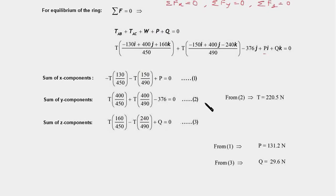So from this equation, we get T equal to 220.5 newtons. And now we plug in this value in this equation to get the value of P and in this equation to get the value of Q. So simplifying the first and third equation, we get P, which is the magnitude of the force P, equal to 131.2 newtons, and Q is equal to 29.6 newtons. So this is our answer.